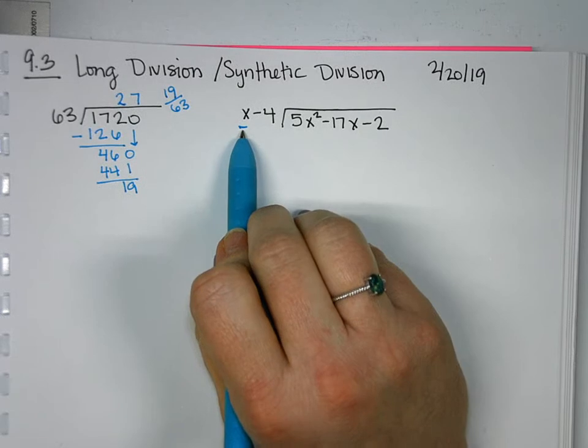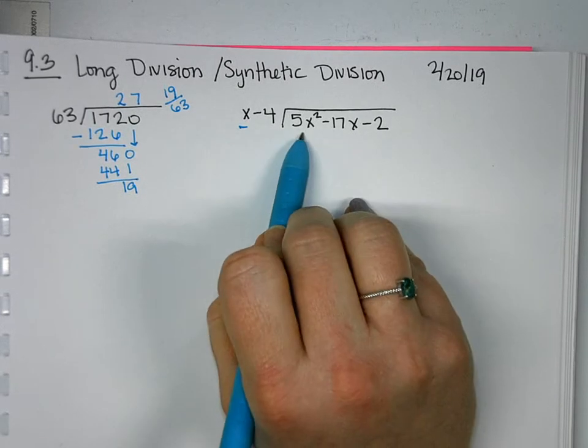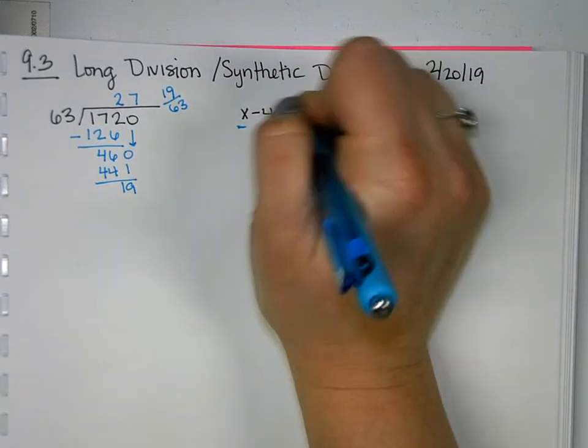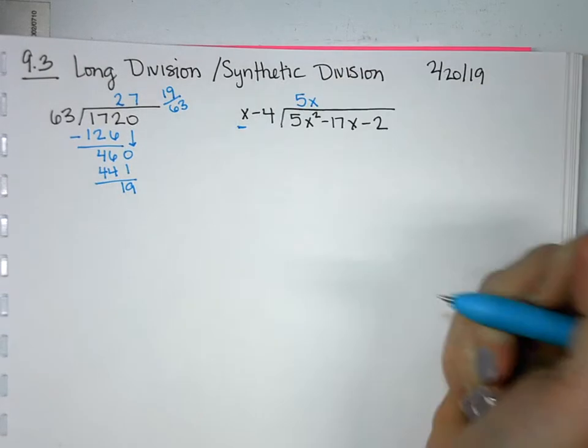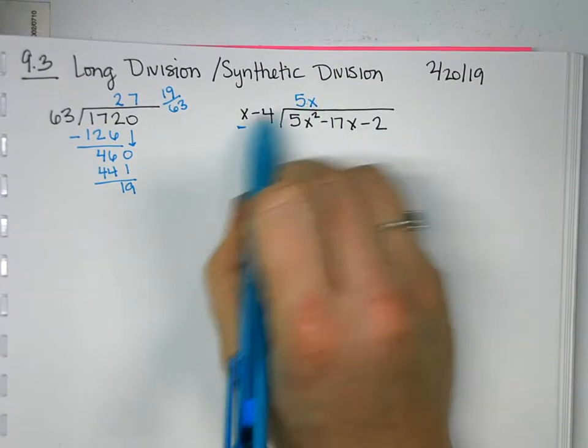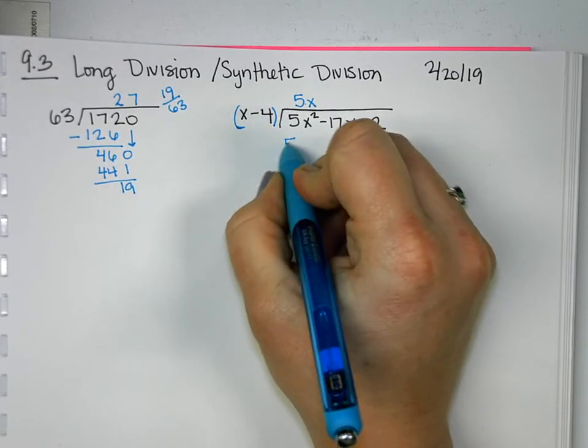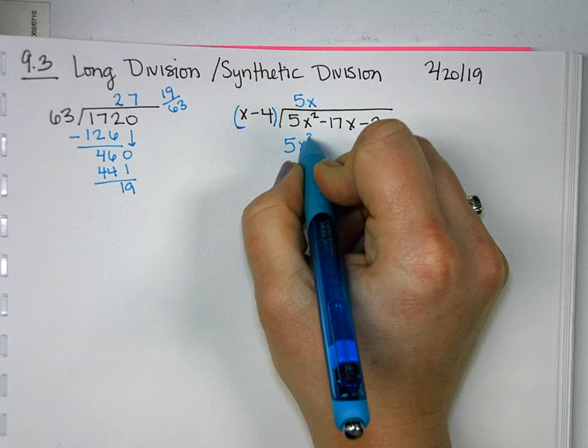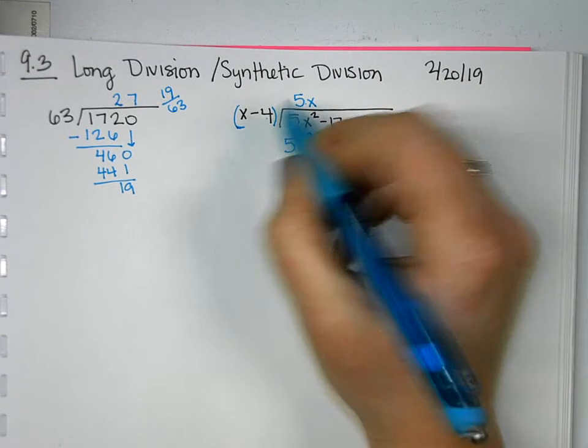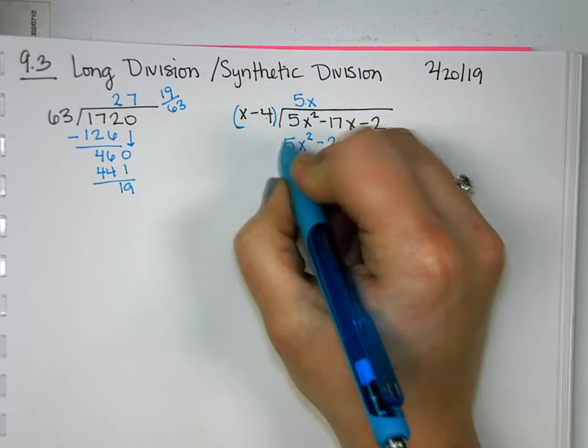So we're only going to look at the first term of our outside polynomial. What do we have to multiply x by to get 5x squared? Well, we need to multiply it by a 5 and an x. So then we multiply everything outside by 5x. So 5x times x will give us 5x squared. 5x times negative 4 will give us negative 20x.